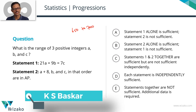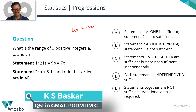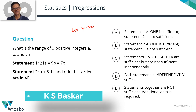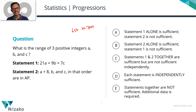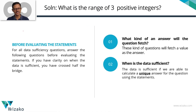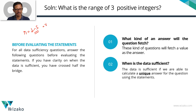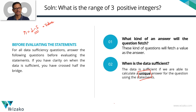Let's start with the question stem. What is the range of three positive integers A, B, and C? This is asking us to compute the range of these three numbers. The range is essentially nothing but the largest minus the smallest number, so the answer is going to be a value. The data is sufficient if that value is unique — if we're able to say the range is, say, 20, then the data is sufficient.